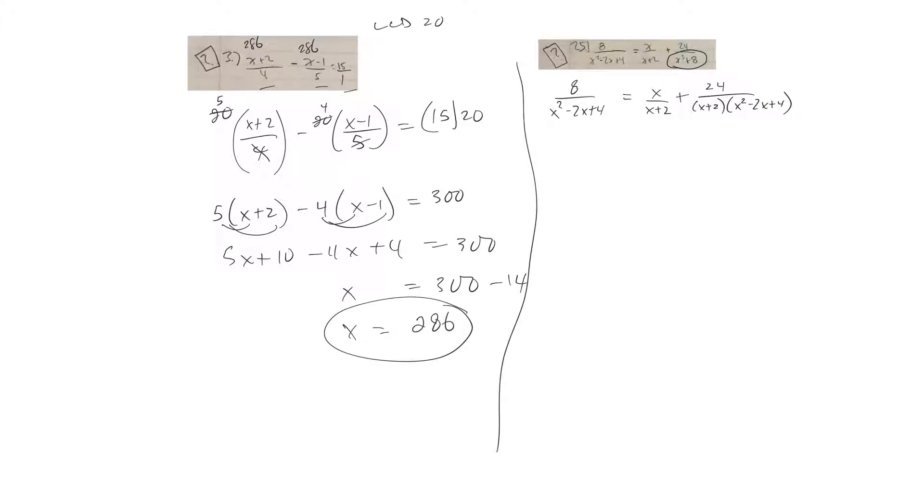Okay, and anytime you have a sum of cubes like this, it's equal to a plus b and then a squared minus ab plus b squared. Okay, so in this case here, it would be like x cubed plus 2 cubed because 2 cubed is 8.